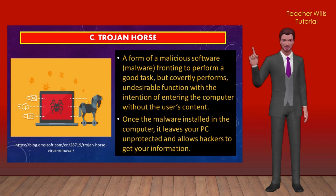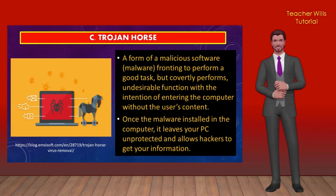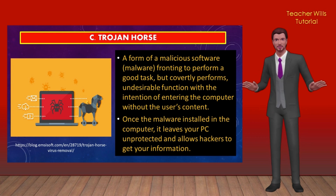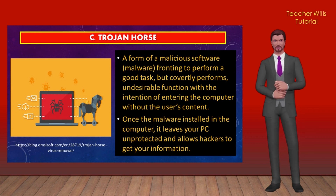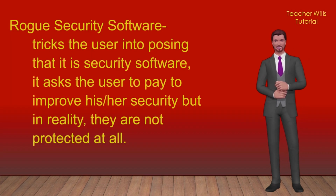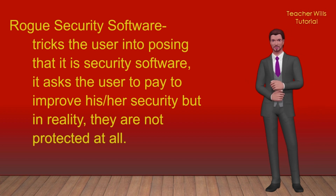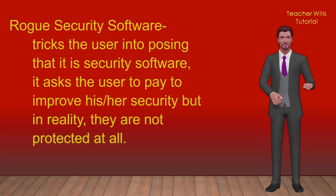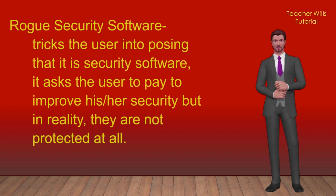The trojan horse. The trojan horse is a form of malicious software or malware, fronting to perform a good task, but covertly performs undesirable function with the intention of entering the computer without the user's consent. Once the malware is installed in the computer, it leaves your PC unprotected and allows hackers to get your information. An example of this is the cracked version of some software. The rogue security software tricks the user into posing that it is security software. It asks the user to pay to improve their security but in reality, they are not protected at all. You will encounter this as a pop-up message that encourages you to download for security of your PC or ads on some browser.